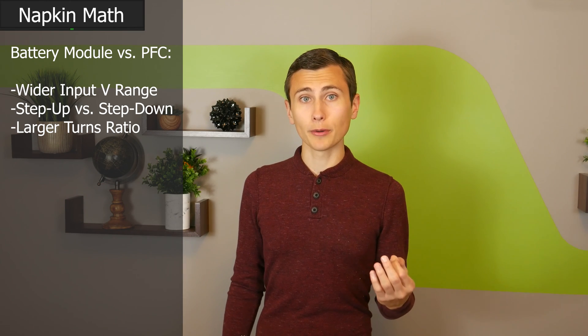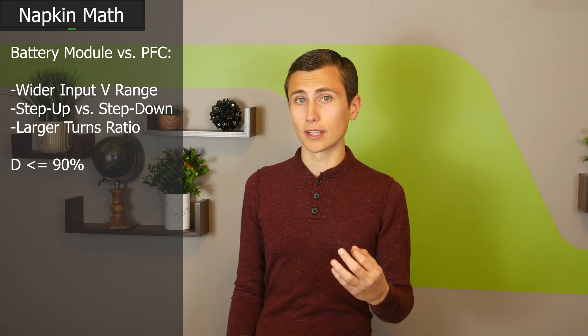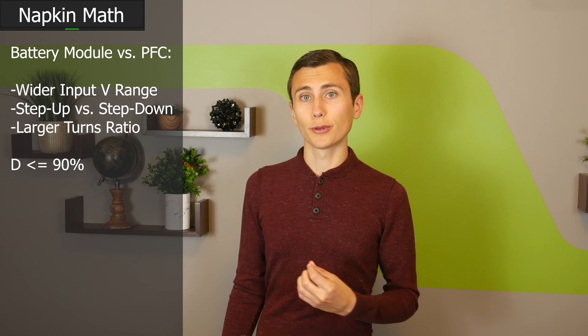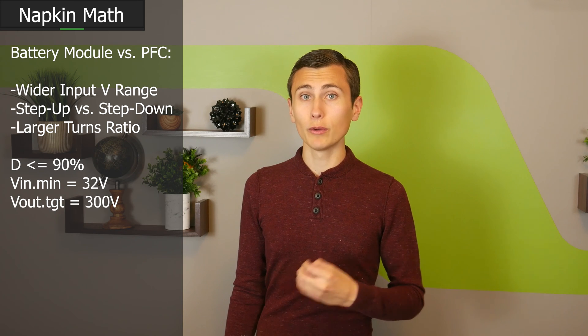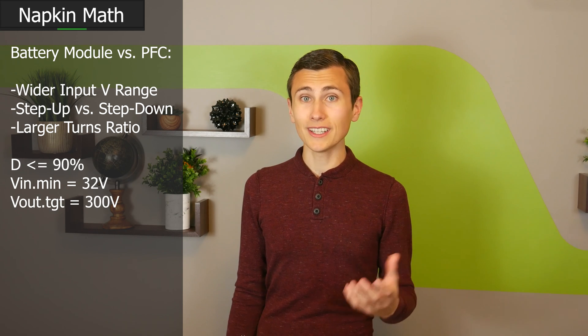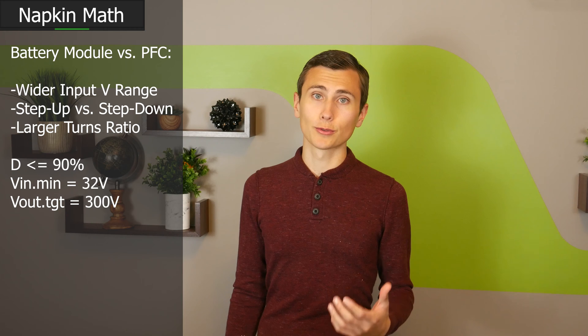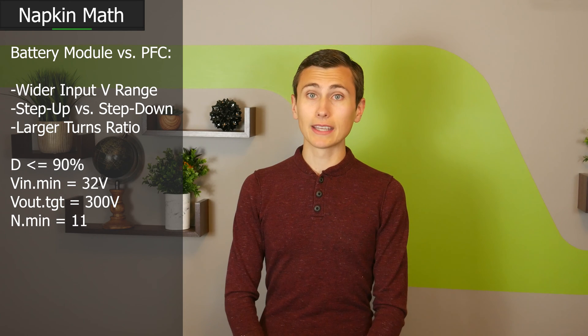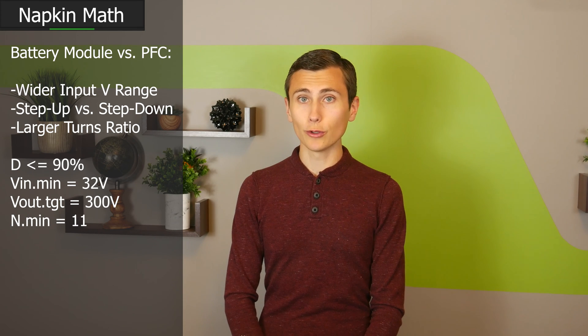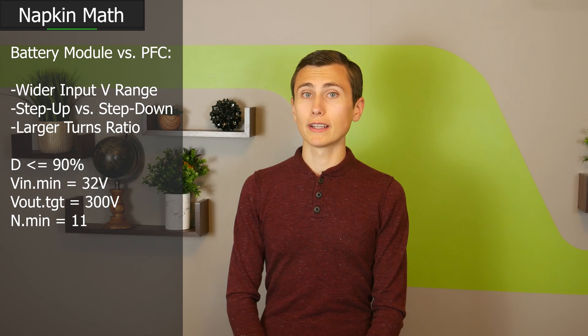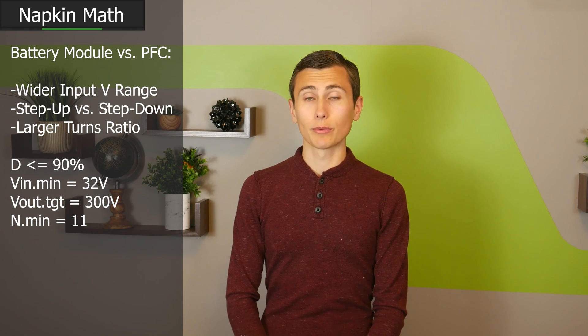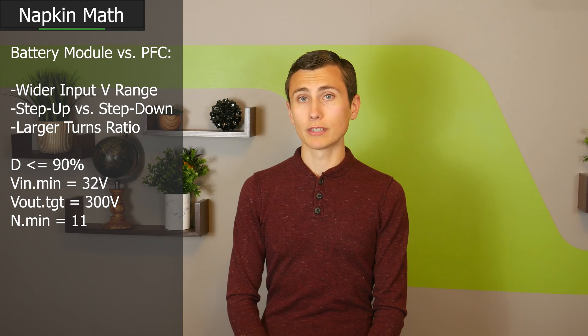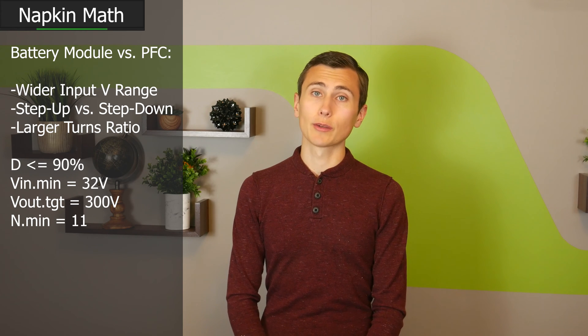Our power supply operates with a maximum duty cycle of 90%, a minimum input voltage of 32 volts, and an output voltage of 300 volts. If we consider an ideal transformer for a moment, the absolute minimum turns ratio is 1 to 11. I calculated this by multiplying 32 volts by 90%, which provides an effective minimum input voltage of 28.8 volts. Dividing 300 by 28.8 returns a value of 10.41 turns, which rounds up to 11.